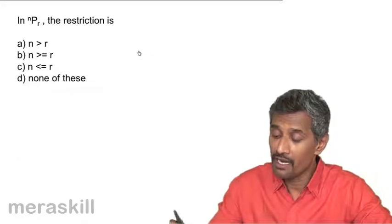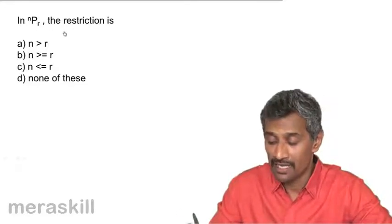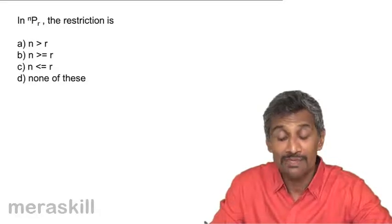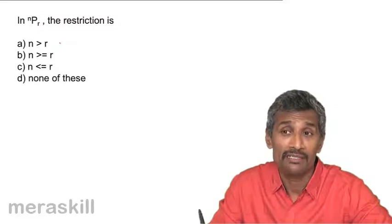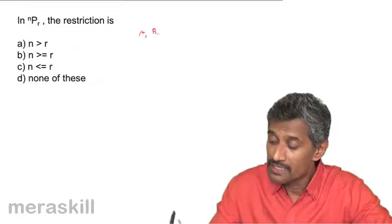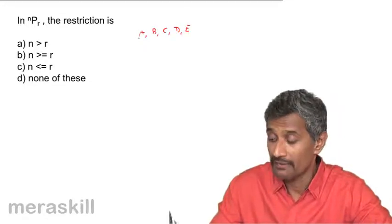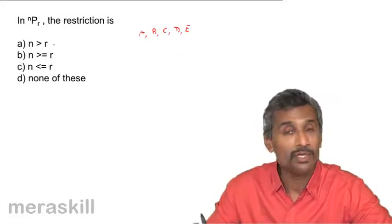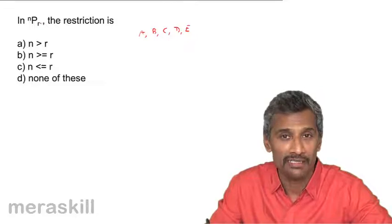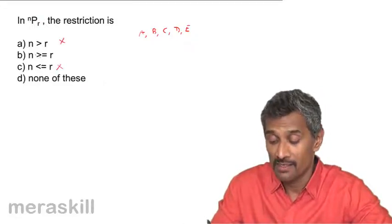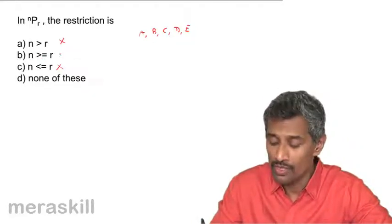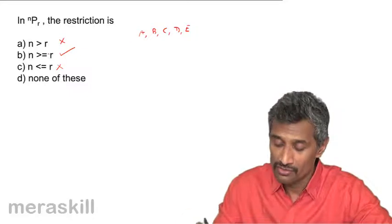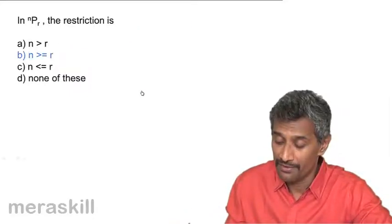Now, we have NPR. The restriction on N and R is that N should always be greater than or equal to R, which means the number of items that you select should always be less than or equal to the total number of items given. For example, suppose you have been given A, B, C, D, E and you need to select and arrange all five — there are various ways of arranging it. So N is not less than R because the total number of items cannot be less than the number selected. N is either greater than R or equal to R. So N is greater than or equal to R is the restriction we have here.